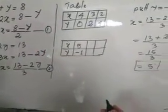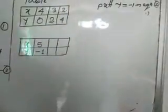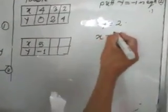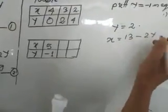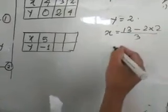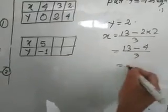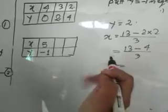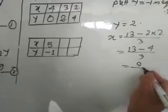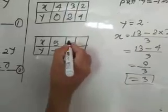Let's take another value. Let's take Y equal to 2. Then X equal to 13 minus 2 into 2, divided by 3. 2 times 2 is 4. 13 minus 4 is 9. 9 divided by 3 is 3. When we take Y as 2, X is 3.